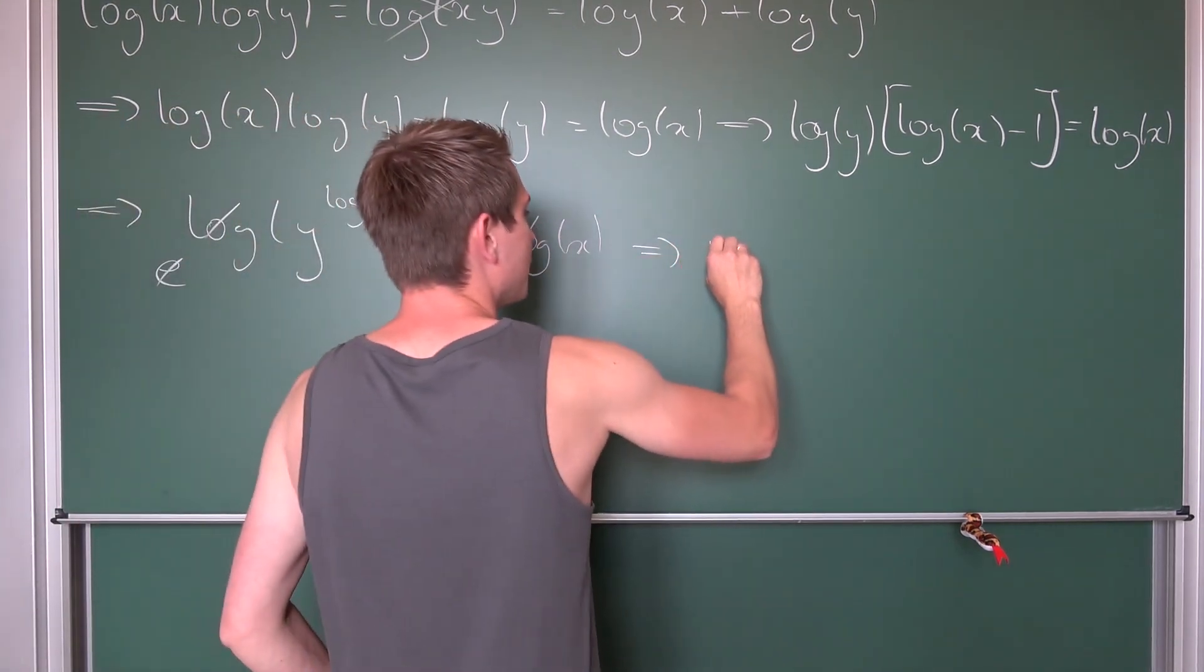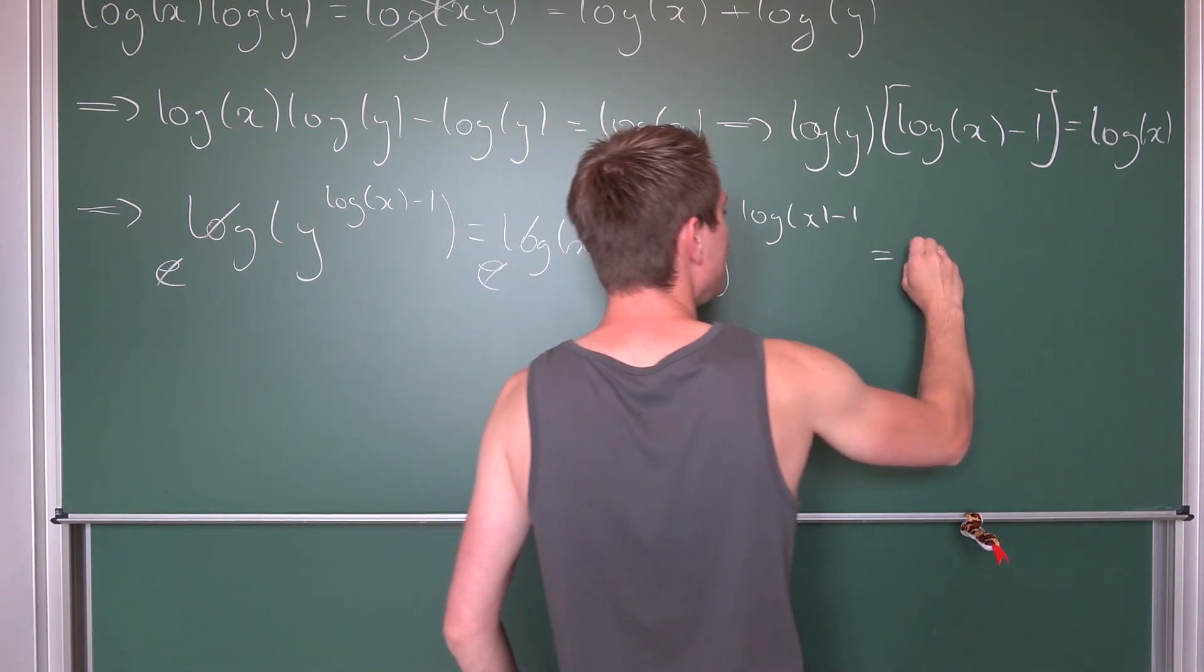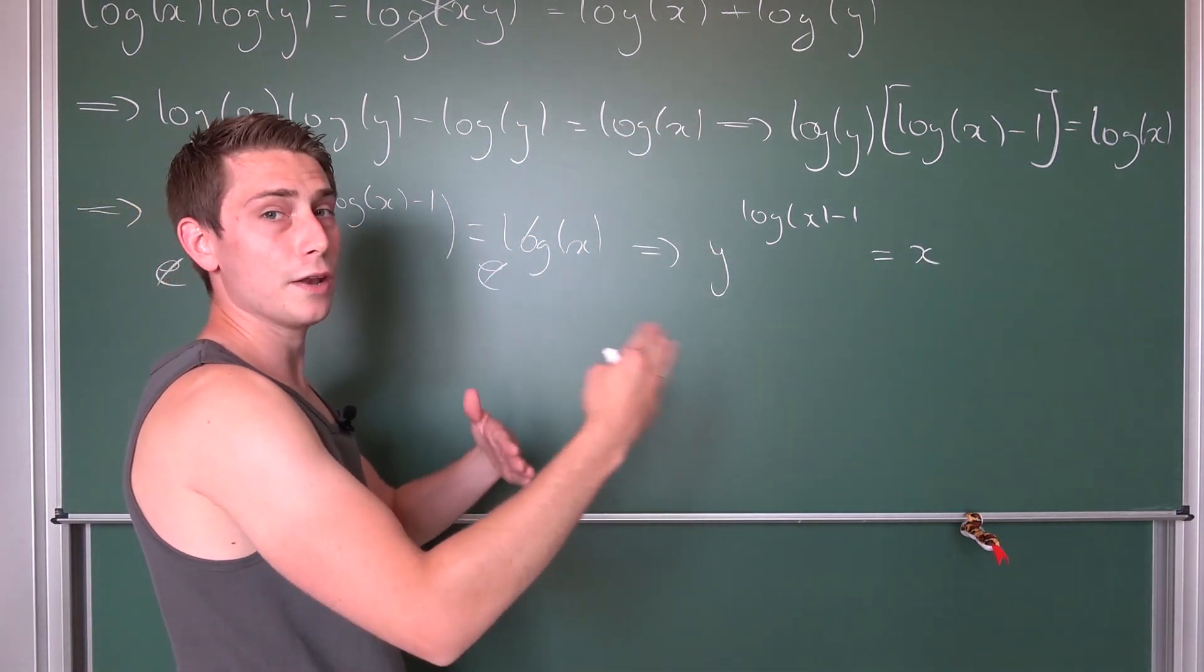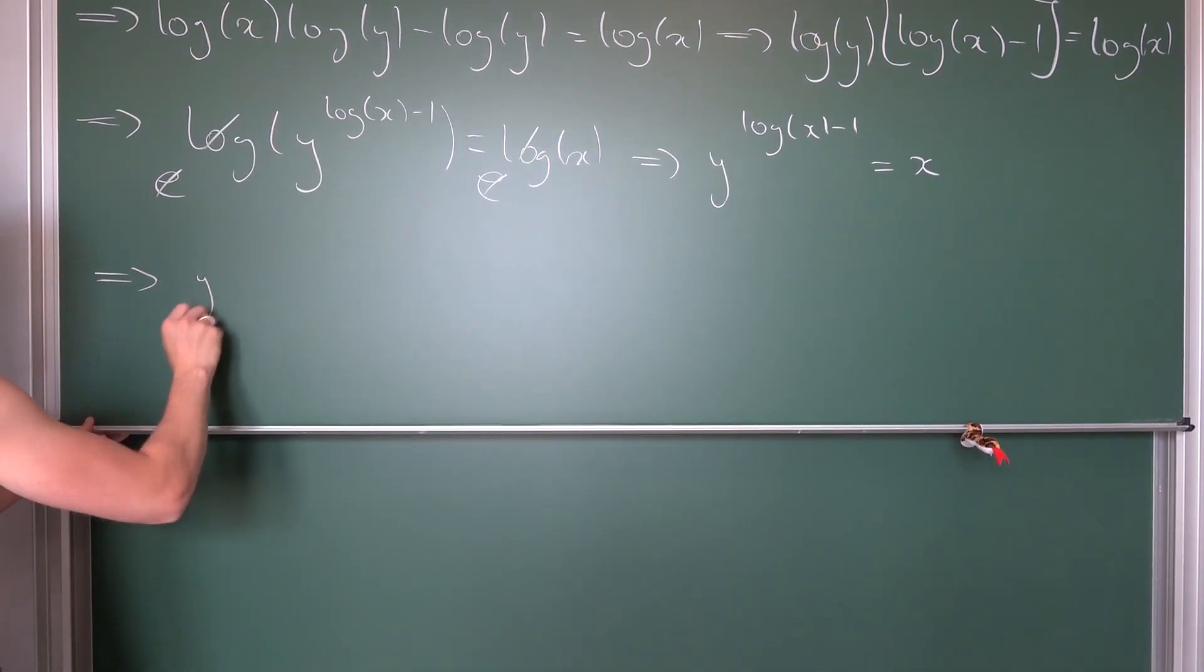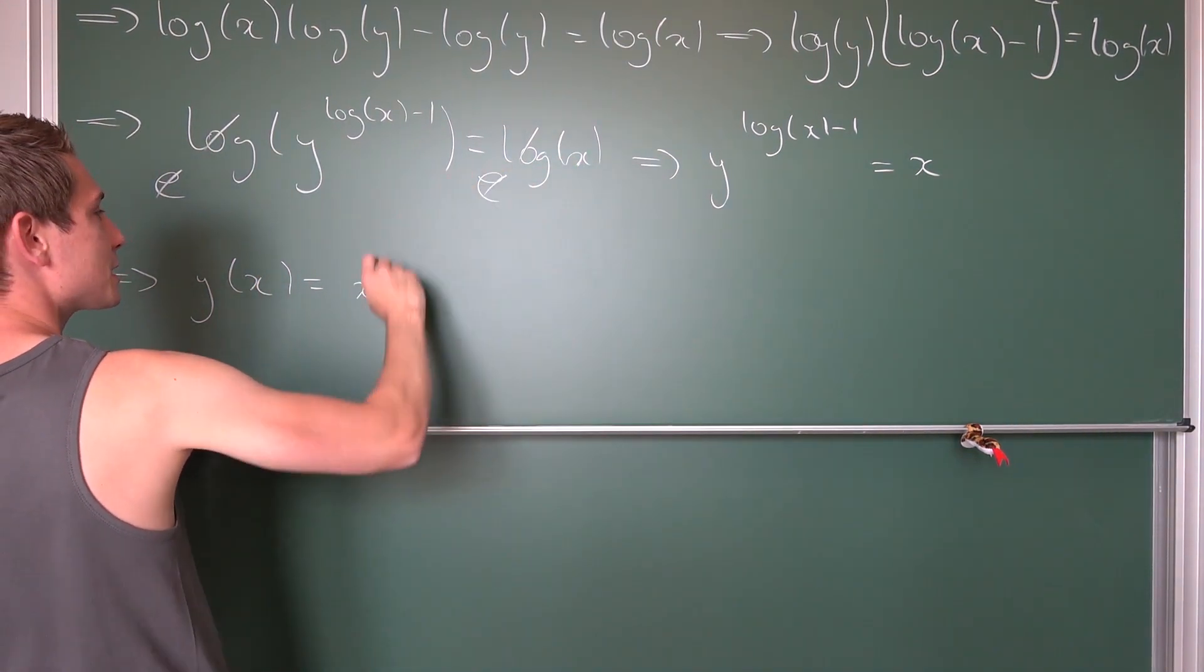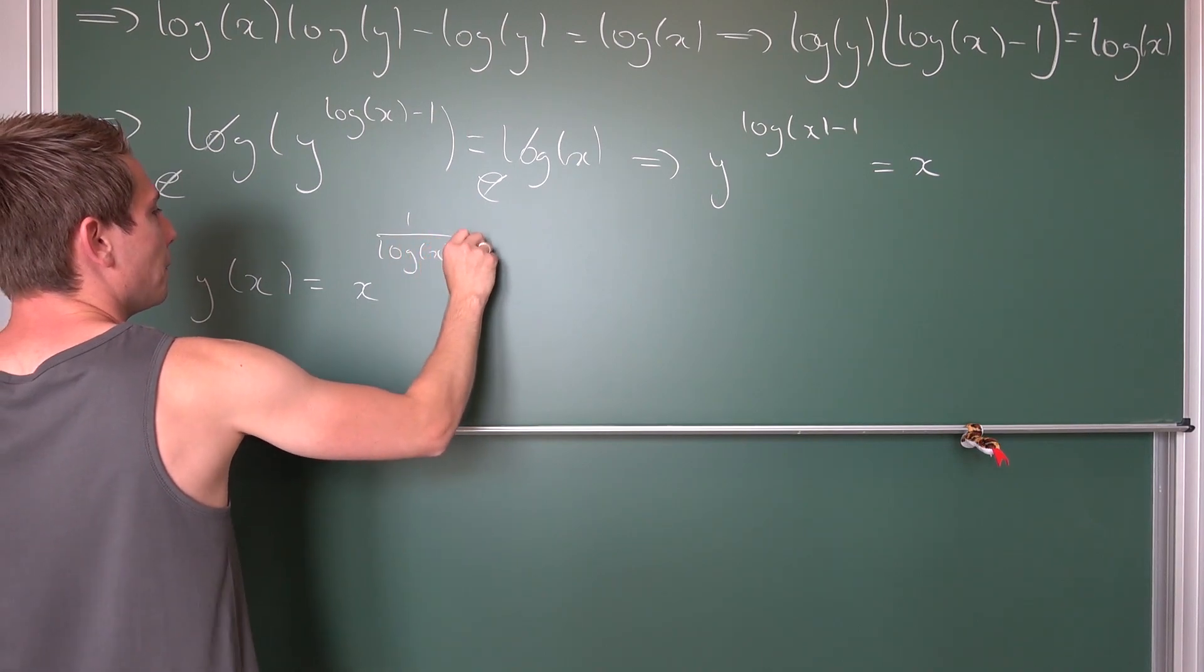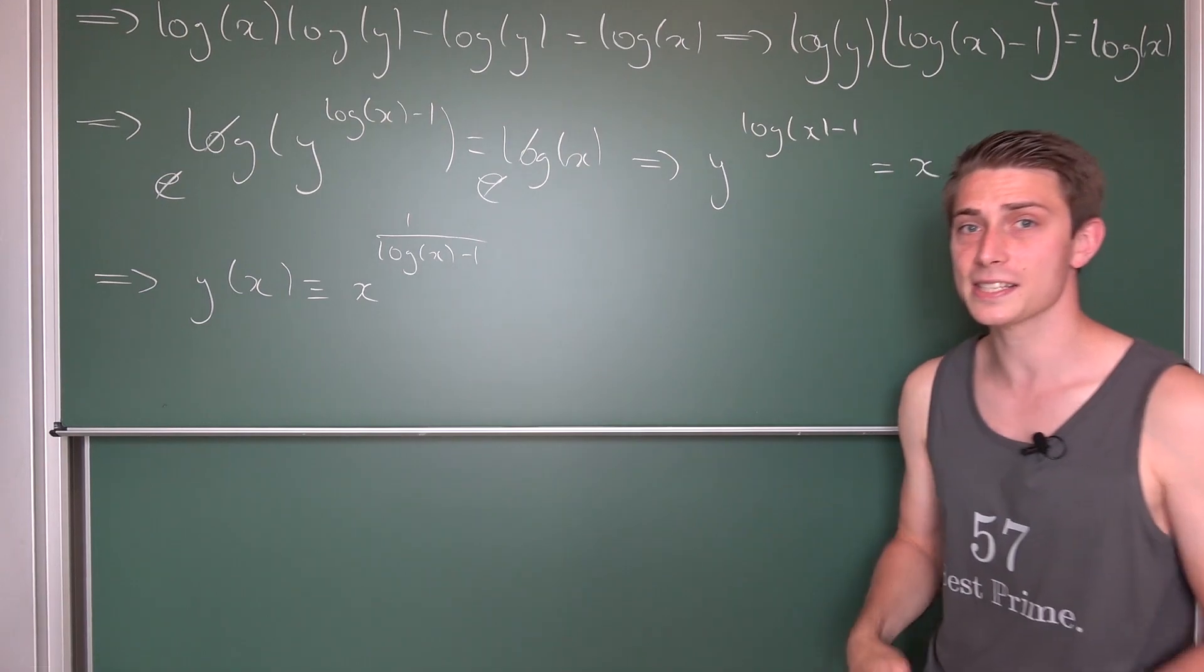Leaving us with y to the log of x minus 1 power being equal to x. And now we can raise both sides to the 1 over log of x minus 1 power, leaving us overall with y with respect to x being equal to x to the 1 over log of x minus 1 power, identically equal for some values of x.